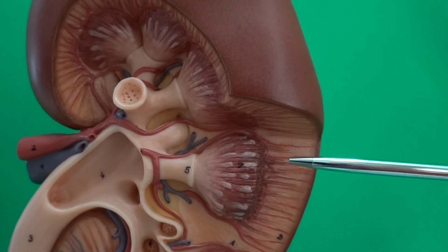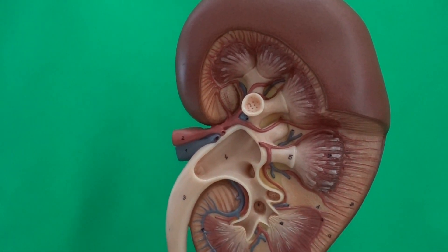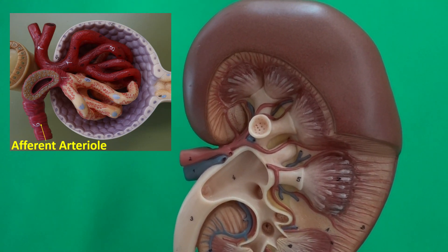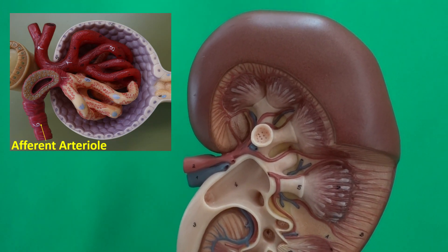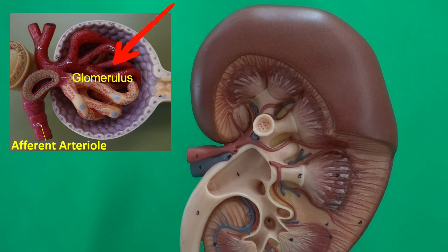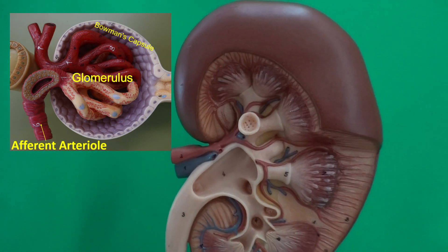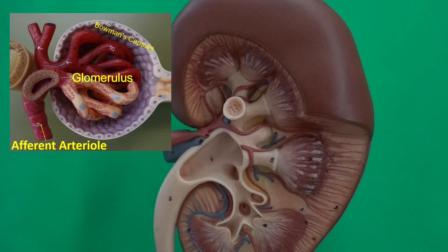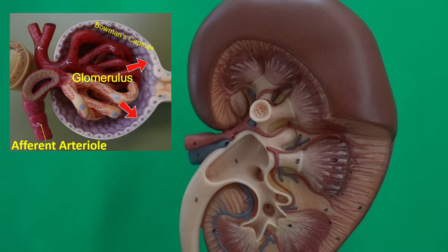When we follow these cortical radiate arteries, we see that from these arteries we get some arterioles named afferent arterioles. Each nephron has one afferent arteriole, and from afferent arterioles we get a ball-shaped network of capillaries named the glomerulus. The glomerulus sits deep inside the Bowman's capsule, or glomerular capsule, and from the glomerulus we push solute and water into the Bowman's capsule — that would be filtration.